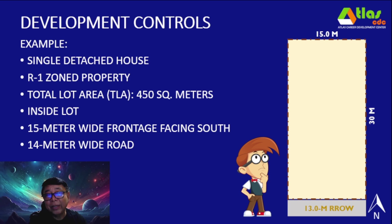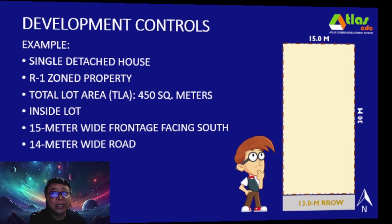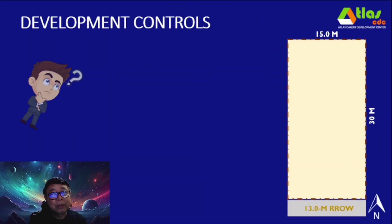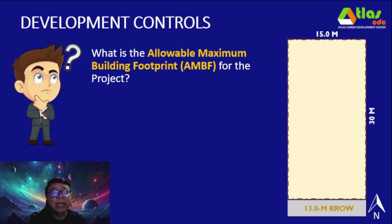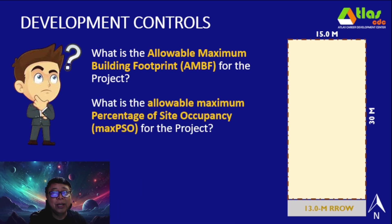With this lot information, we want to know what is the development potential of this lot — or up to how much extent can we exploit or develop this property. Our first development control is about the allowable maximum building footprint, or the AMBF, and the allowable maximum percentage of site occupancy.